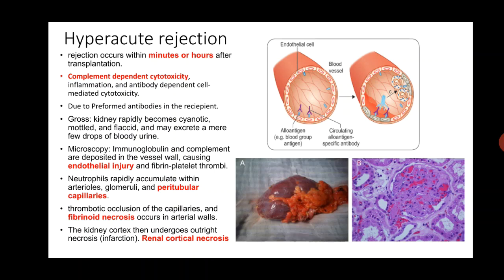Hyperacute rejection occurs within minutes or hours after transplantation. When the donor kidney's blood vessels are anastomosed with the recipient's blood vessels, blood of the recipient starts flowing into the allograft. As soon as blood flows in, the immune cells of the host enter the graft, identify the graft antigens as foreign, and mount an immune response, leading to hyperacute rejection within minutes or hours of transplantation.